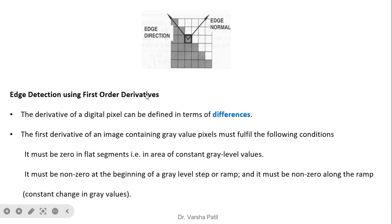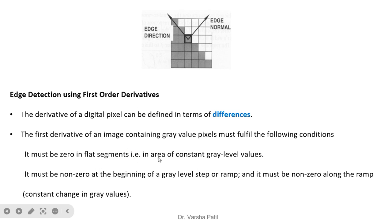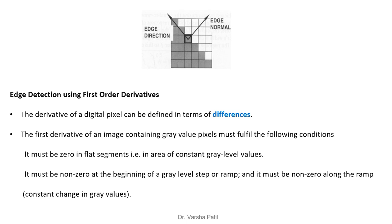For edge detection using the first order derivative, we calculate the difference between adjacent values. The first derivative of an image must satisfy: it must be zero in flat (constant) regions, non-zero at the beginning of a gray level step or ramp, and non-zero along the ramp. When intensity values are constant, the derivative is zero. When there is a change, the derivative is positive or negative, indicating the presence of an edge.